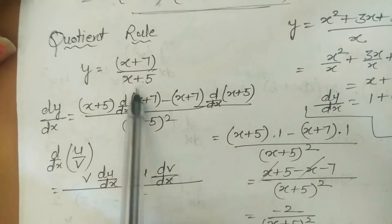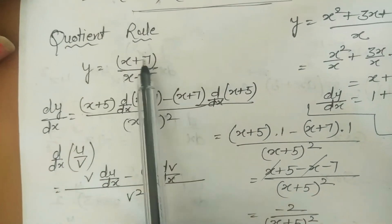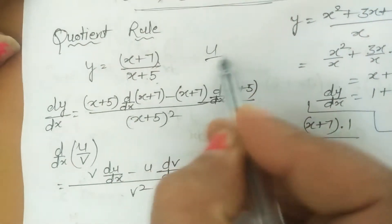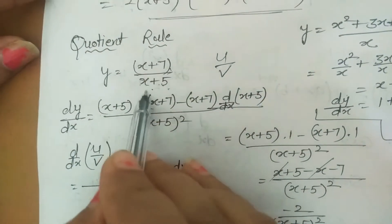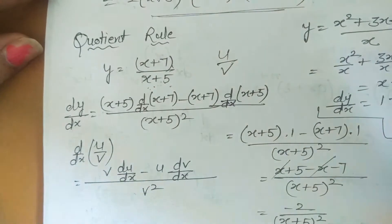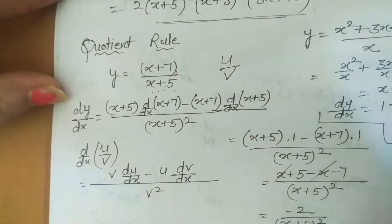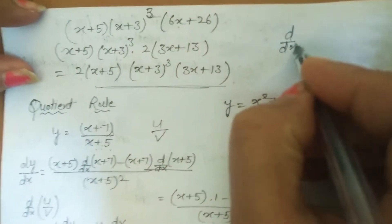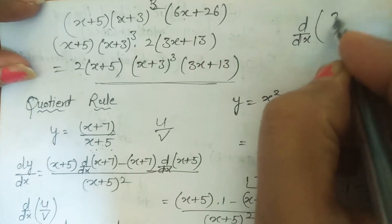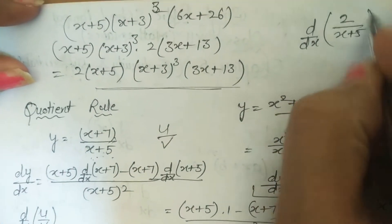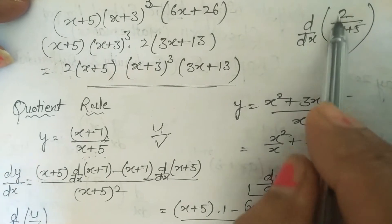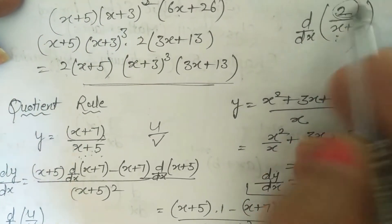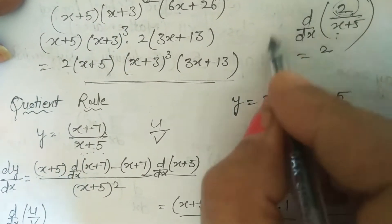Note: for 2/(x+5), there is no need to apply the quotient rule, since 2 is a constant. Take 2 outside and write 1/(x+5) as (x+5)^(−1), then apply the (ax+b)^n formula.